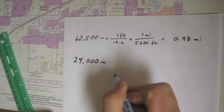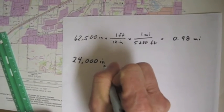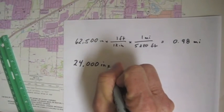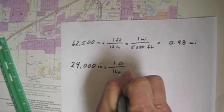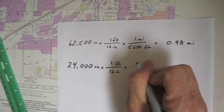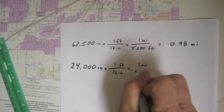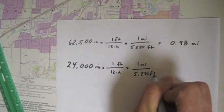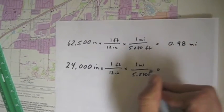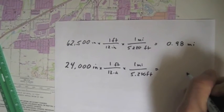And so what we want to do is multiply it by 1 foot over 12 inches times 1 mile is equal to 5,280 feet. So you cancel those out, and you're going to end up with what 1 inch equals, and that would be in miles.